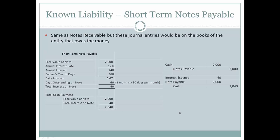Now let's look at the journal entries. When the company originally takes out the note, they debit cash $2,000 and credit notes payable $2,000. When paying back the note at maturity, they debit interest expense $40 and notes payable $2,000, then credit cash $2,040.